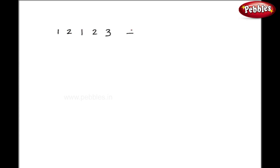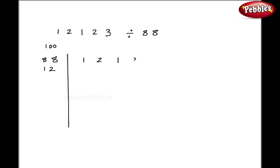Let us now consider one example where we are dividing by a two-digit number. I will take a bigger number like 12123 divided by 88. I'll write 88 here, and my base is 100, so the difference is 12. I write the dividend 12123. There are two zeros in my base, so I will give a stroke after two digits. The rest of the procedure is the same as before.